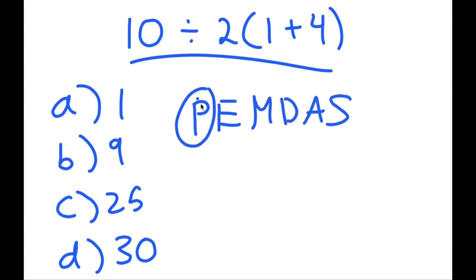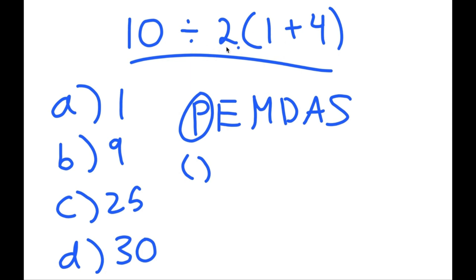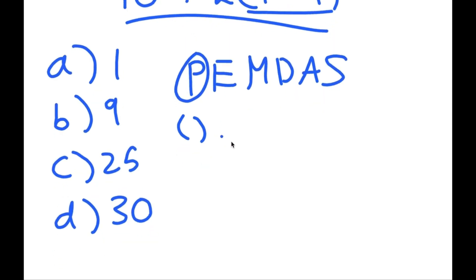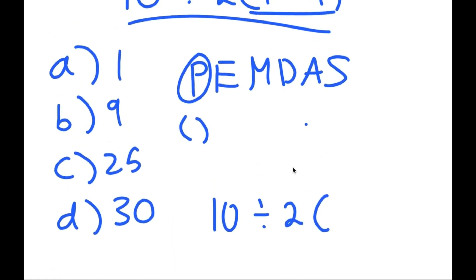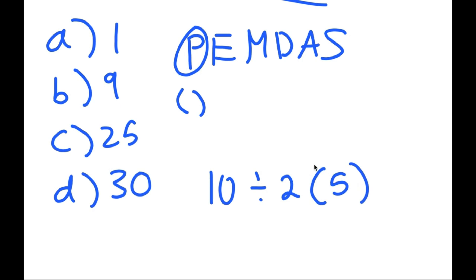We go from left to right. We first start with parentheses. Do we see any parentheses here? We do — right here, 1 plus 4. So we're going to solve what's in the parentheses. So now I have 10 divided by 2 times 1 plus 4, which is 5. Next, we go to exponents. There are no exponents here, so we can move on.